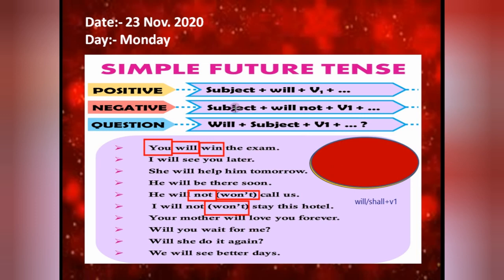Now the last one we have is the question form. If you want to frame a question — as I have told you in the previous tenses also — simply we have to put the helping verb in the front and the remaining sentence as it is. So here you can see: 'Will you wait for me?' What have we done? Simple — we have put the helping verb in front of the sentence and the remaining as it is. If I want to frame the positive sentence: 'You will wait for me.' For the interrogative, I put the helping verb in front. Same: 'Will she do it again?' — and at the end put a question mark.